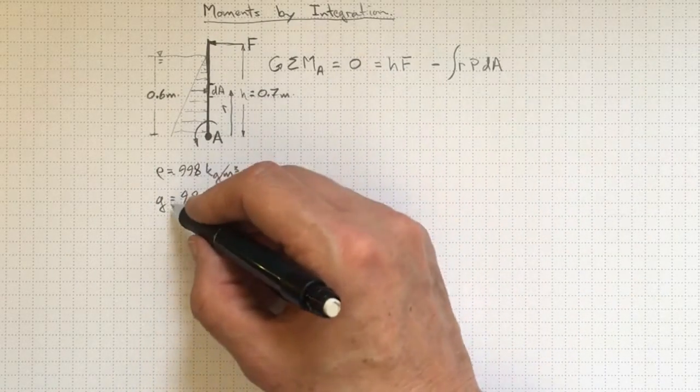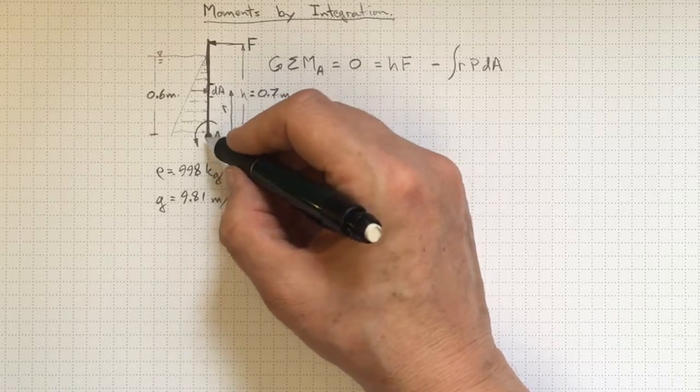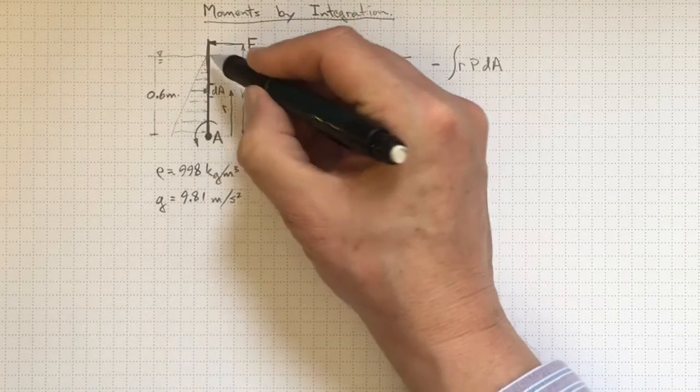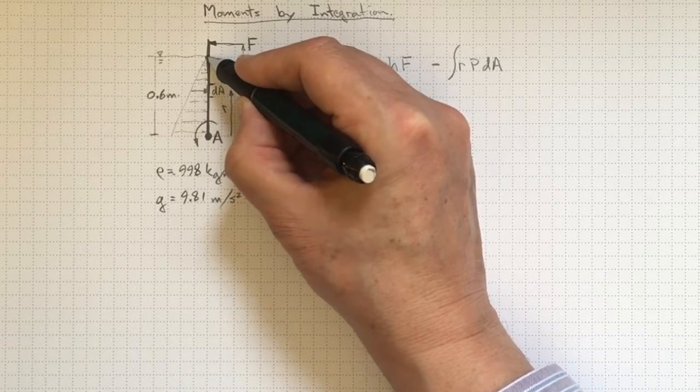Well, we can now figure out what the pressure is. It's going to be rho g times 0.6 down here at A, and it's going to be zero gauge up here at the surface.